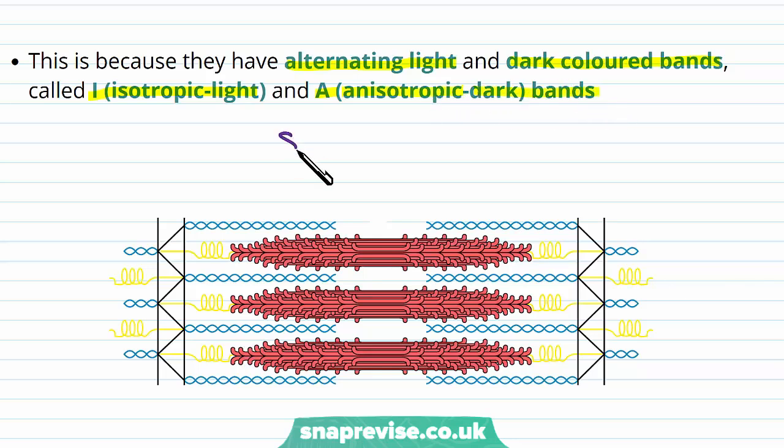So here's a sarcomere, drawn as a diagram. The lighter bands are lighter in colour. And they refer to the certain area which is lighter because it's less dense. So this would be an I band. And then the dark band is where it looks darker in the image, which is called the A band.